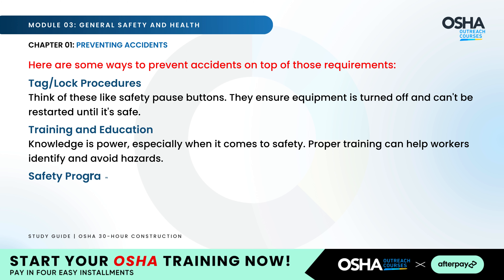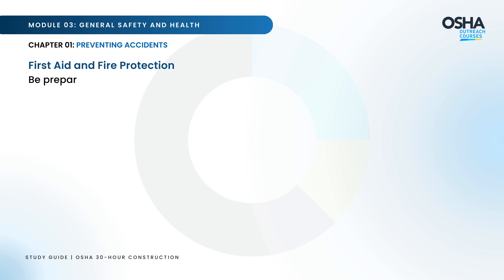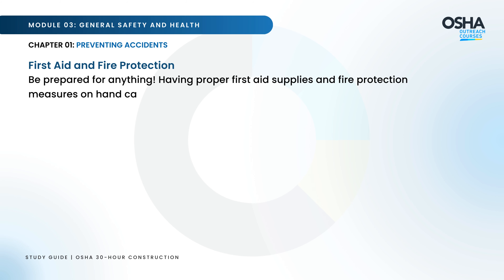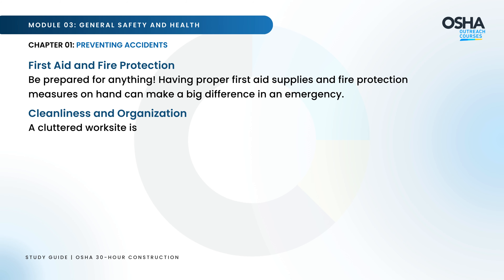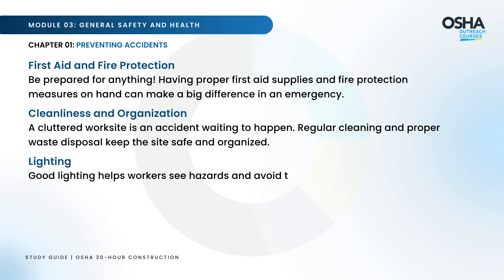Safety programs are like a roadmap to a safe worksite — they outline procedures, training, and protocols to keep everyone safe. First aid and fire protection: be prepared for anything; having proper first aid supplies and fire protection measures on hand can make a big difference in an emergency. Cleanliness and organization: a cluttered worksite is an accident waiting to happen, so regular cleaning and proper waste disposal are essential. Good lighting also helps workers see and avoid hazards.